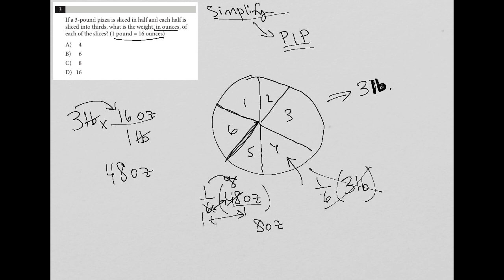One times one—there's no need to write that as my denominator. So altogether, that single slice of pizza should be eight ounces. And that is answer choice C.